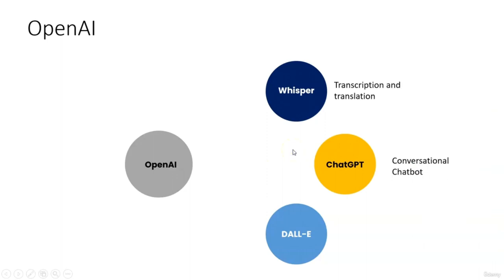Whisper AI is about transcription and translation services. It uses natural language to transcribe audio files and to translate content in audio files to the language of choice. Whisper supports many languages — not just English, but Asian languages, Indian languages, and European languages as well.